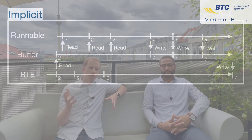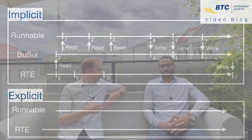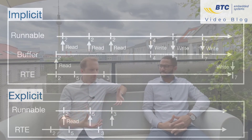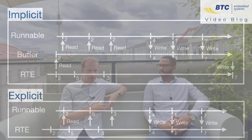On the other hand, with explicit communication, as soon as the data changes, the modified value becomes available and becomes visible for other functions. For example, if the runnable reads the same data multiple times, it might get a different value each time in case it was changed outside. This could be desired or not, so in the end it is really a design choice.